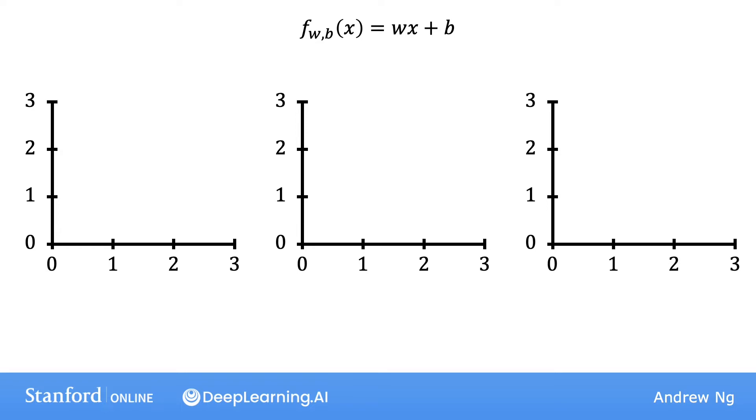Depending on the values you've chosen for w and b, you get a different function f of x, which generates a different line on the graph. Remember that we can write f of x as a shorthand for f_wb of x. We're going to take a look at some plots of f of x on a chart to help you build intuition on how w and b determine f.